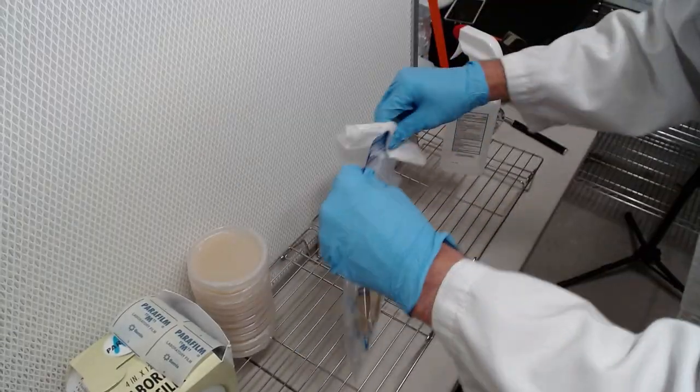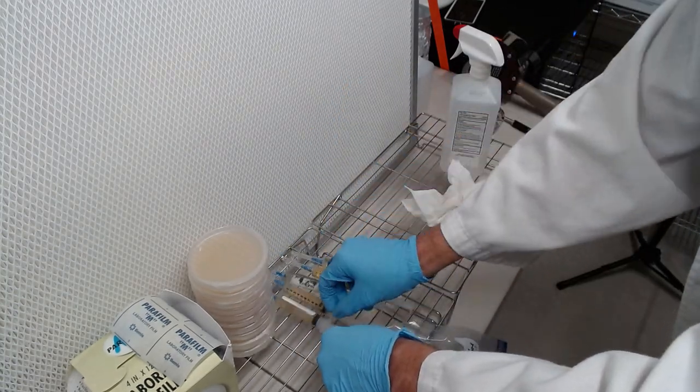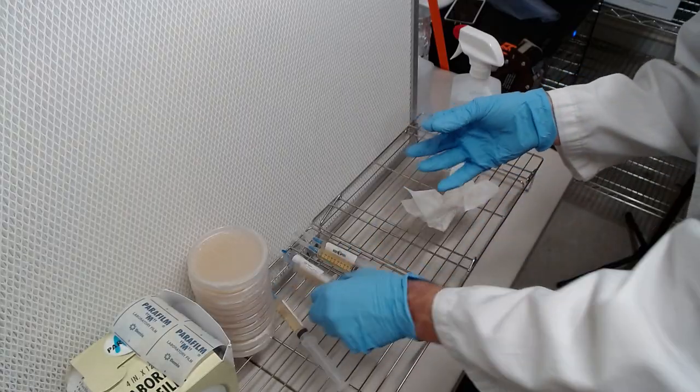Heads up, rubbing alcohol can completely remove ink from labels and petri dishes. Applying a small strip of packing tape to my syringes helps preserve the labels.